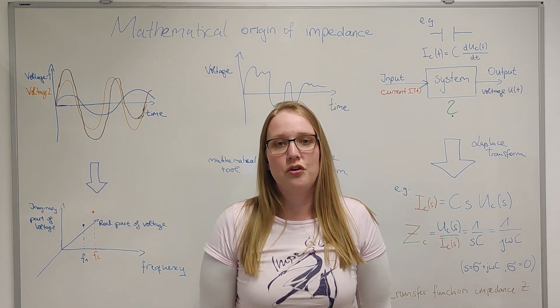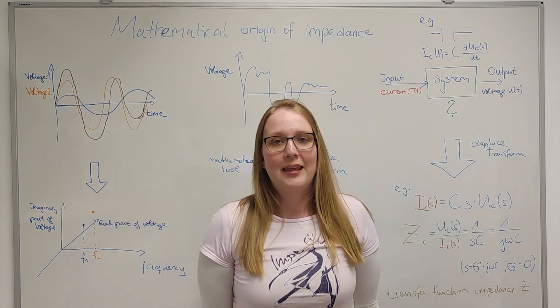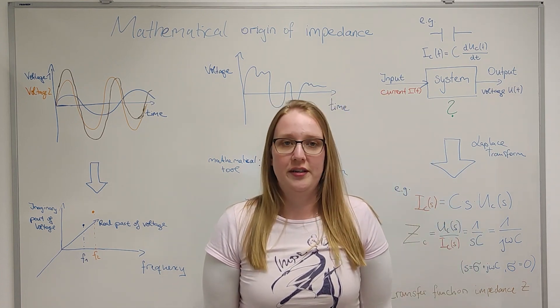sinusoids can easily be plotted as complex numbers representing amplitude and phase information over frequency. This way, even a superposition of several sinusoids, like the black function, can be expressed as two points in a coordinate system.